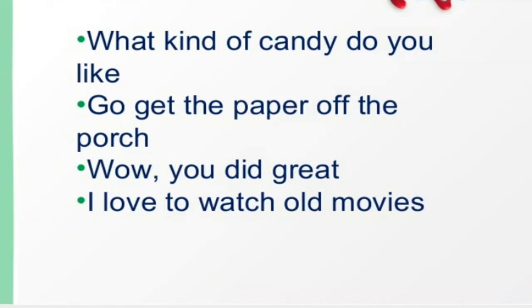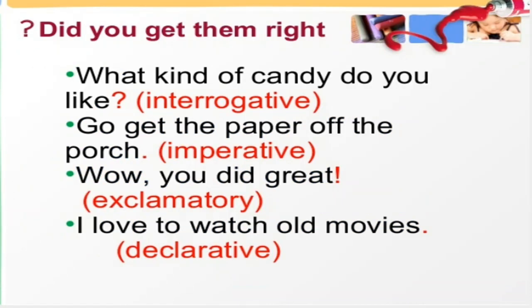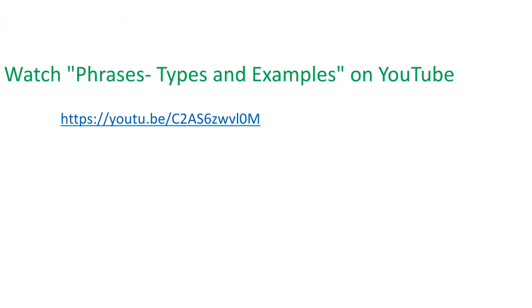Now let us see one activity. Four sentences are given and we will put the appropriate symbol to end each sentence. First: 'What kind of candy do you like?' — question mark; it is an interrogative sentence. Second: 'Go get the paper off the porch.' — full stop; it is in imperative form. Third: 'Wow, you did great!' — exclamation mark; it is an exclamatory sentence. Fourth: 'I love to watch old movies.' — full stop; it is a declarative or assertive sentence.